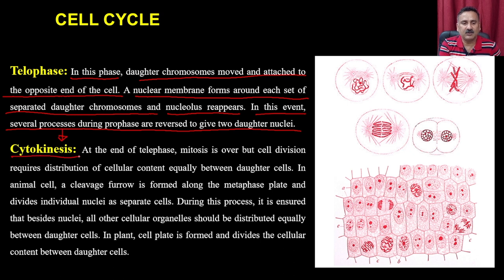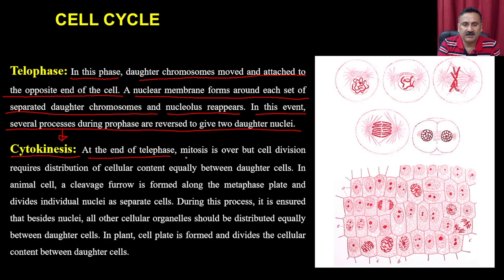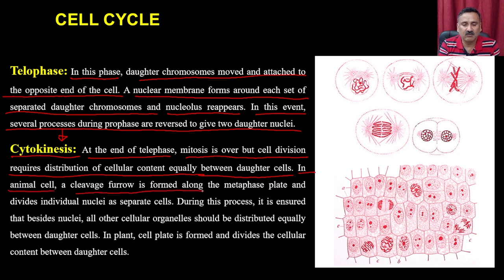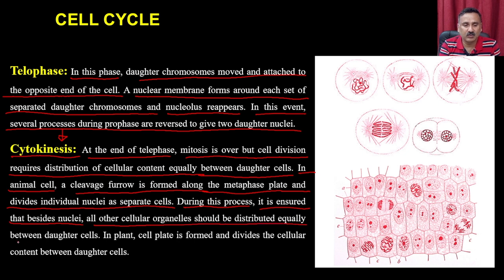After telophase comes cytokinesis — the division of cellular content. At the end of telophase, mitosis is over, but cell division also requires equal distribution of cellular content between daughter cells. In animal cells, a cleavage furrow forms along the metaphase plate and divides the individual nuclei into separate cells. In plant cells, a cell plate forms to divide the cellular content.